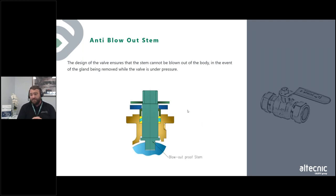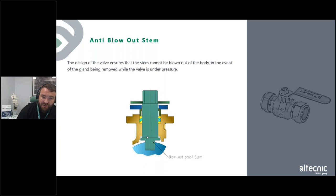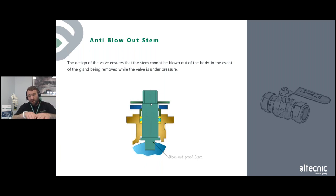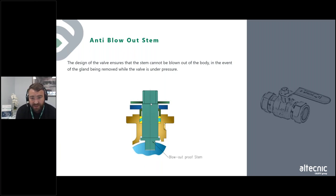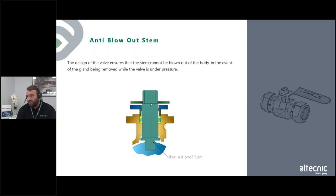The anti-blow-out stem is a very important part of the valve. The design ensures that the stem cannot be blown out of the body in the event of the gland being removed or the valve being under pressure. Before the ball is fitted in the body, the stem is pushed through from the inside with a lip on the bottom, so it cannot be pulled all the way through. Even if the glands are removed, it stops it from coming out. Always look for this anti-blow-out stem feature — it prevents serious problems from deterioration or accidental gland removal.